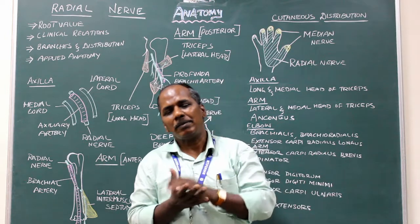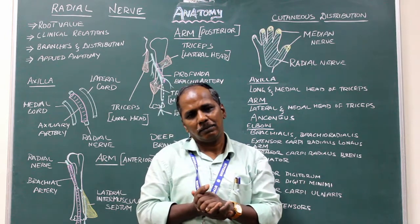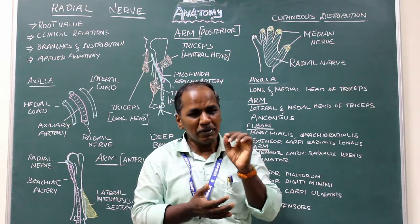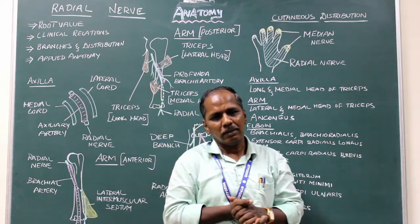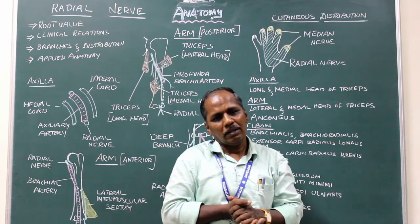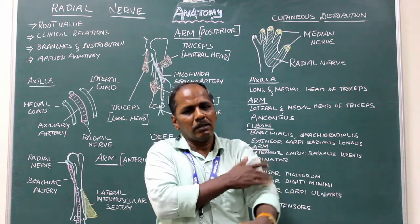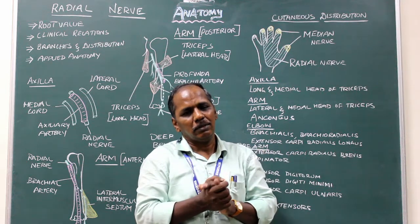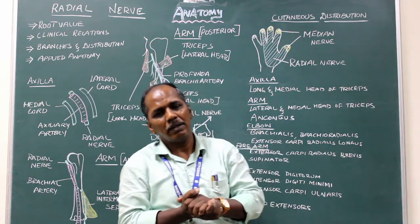Applied anatomy: Injury to the radial nerve in the axilla or spiral groove is very common.